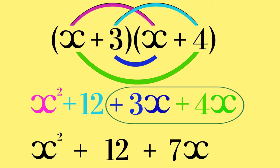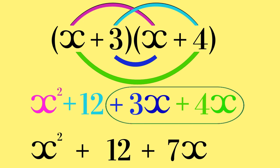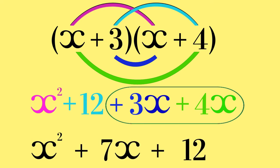Normally, with this type of expression, we write the terms in a specific order. We start with the term containing the variable squared, followed by the term containing a variable with no power, and the term consisting of a number is last. So our final answer will be x squared, add 7x, add 12.